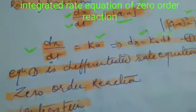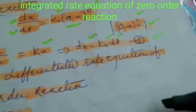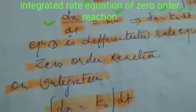Equation 1 is called differentiated rate equation of zero order reaction. On integration: